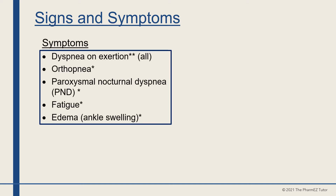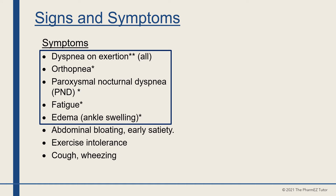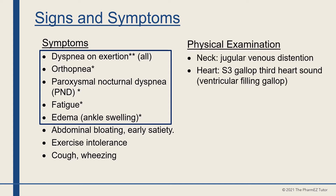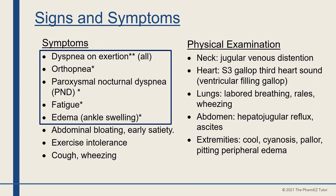Key symptoms seen in heart failure include dyspnea on exertion, orthopnea, paroxysmal nocturnal dyspnea, fatigue, edema, and ankle swelling. Other symptoms include abdominal bloating and early satiety, exercise intolerance, and cough and wheezing. On physical examination, the patient may show jugular venous distension in the neck, an S3 gallop or third heart sound, labored breathing in the lungs, rales and wheezing. The abdomen may show hepatojugular reflux or ascites, and the extremities will be cool with cyanosis, pallor, and pitting peripheral edema.